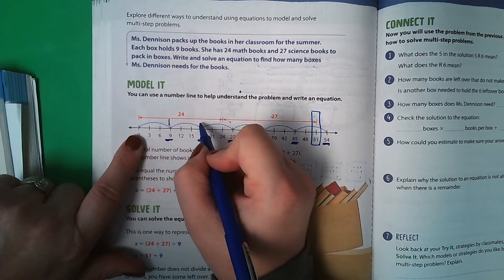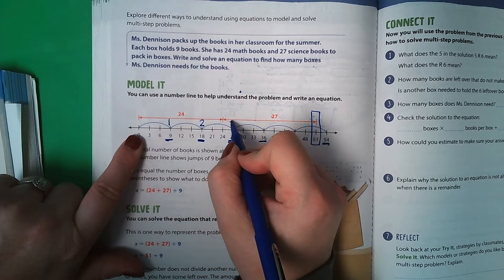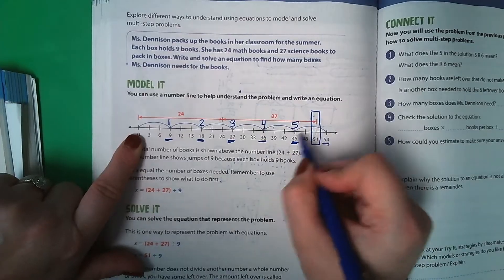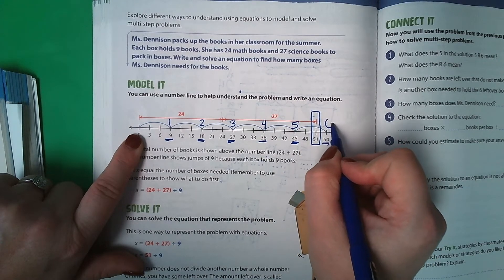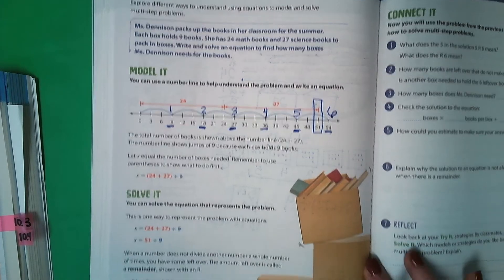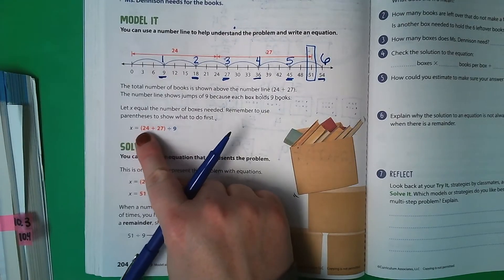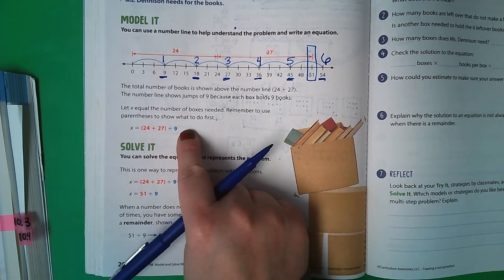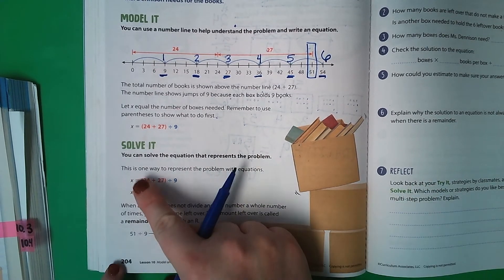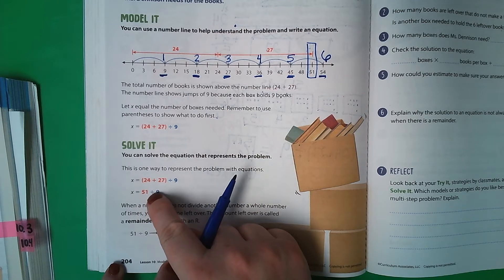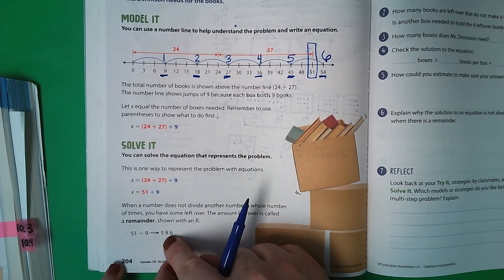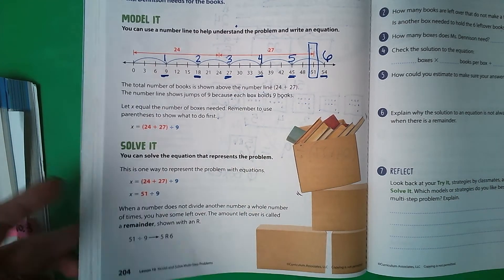And her last one would end over here. So then you would find out how many boxes she needs by counting each skip. So here's 1 box, 2 boxes, 3 boxes, 4 boxes, 5 boxes. And then this last one's not completely full, but she still needs a box for it, so it's going to be 6 boxes. And you can see down here where they wrote their equation, 24 plus 27 divided by 9, which is the exact same thing that we got. Now they're going to solve it. 24 plus 27 is 51 divided by 9. Well, 51 divided by 9 is 5, and we have 6 left over.